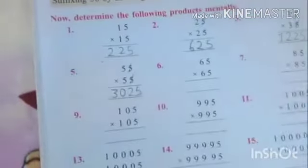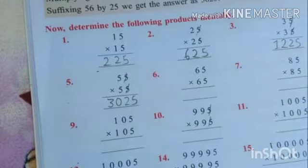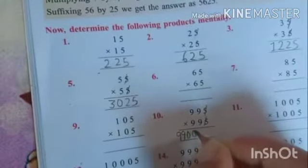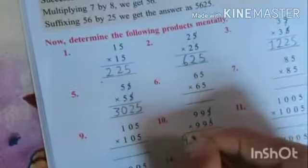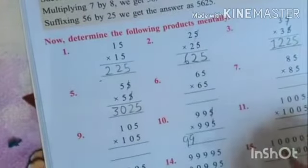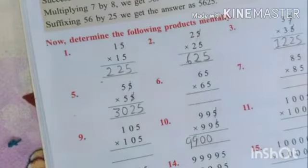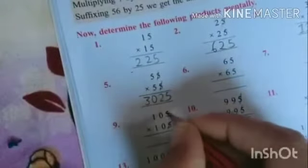Aapko 5 ko cut karna hai. Ab 99 ke after 100, 100 se multiply karna hai. Will get 9, 9 double 0. 99, 100 se multiply karna hai, we get this much, 9, 9 double 0, and 25 ko suffix in karna hai. Got it?